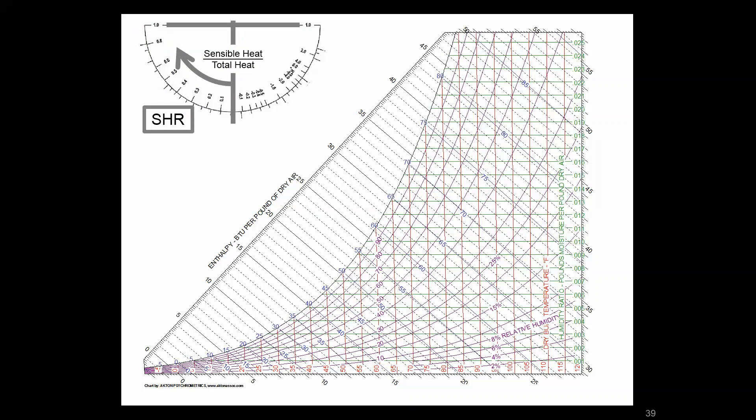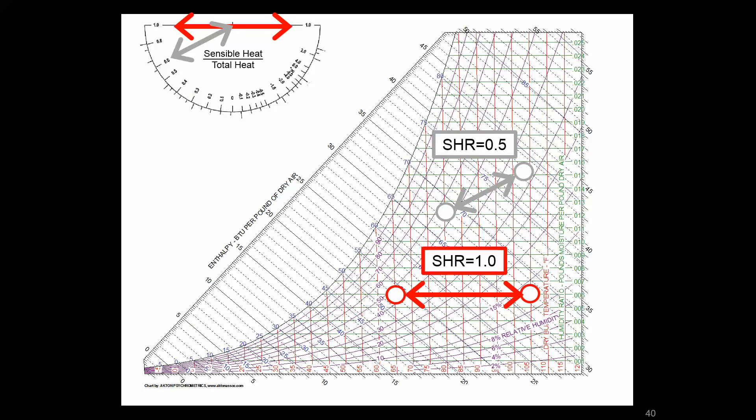Another way we talk about not just states but processes is with things like the sensible heat ratio. Sometimes in psych charts you might get a wheel at the top here or lines on the outside that say SHR. We're talking about the sensible heat as a ratio of the total heat, which tells you how much latent energy versus sensible energy is going into that process. You line up the angle of your process and match it with this wheel. We can talk in terms of a sensible heat ratio of 0.5 versus this flat one of 1.0, which tells you all of the process is characterizing sensible heat change.